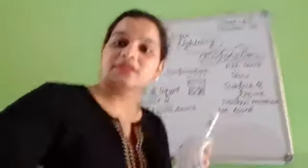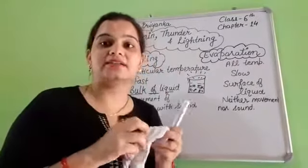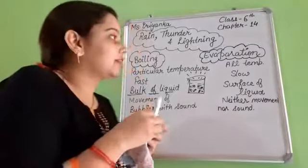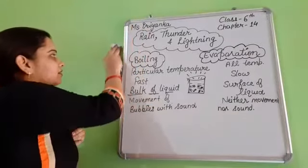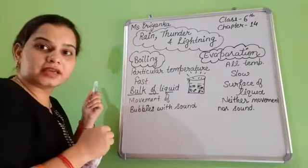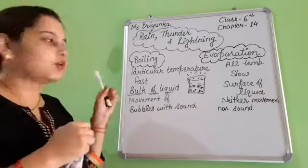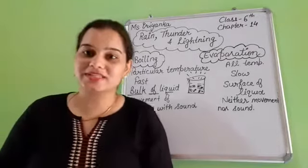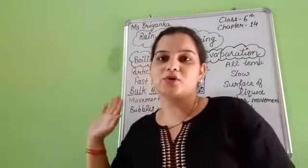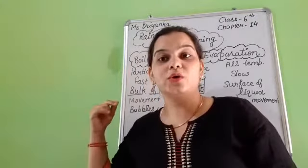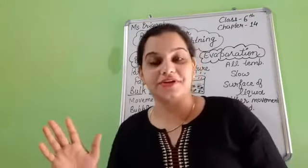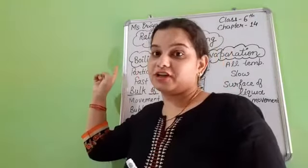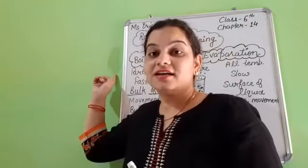Let me give you an example. You can see what is in my hand — I have a wet cloth. I am rubbing it on the wall. You can see there is a wet patch here. After some time, you will see that this patch will dry up completely and disappear. So evaporation is what happens at the surface of the liquid.